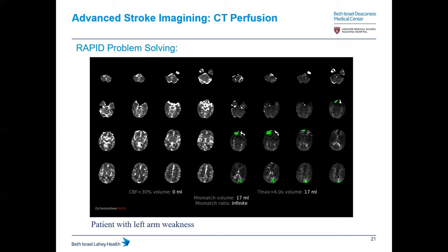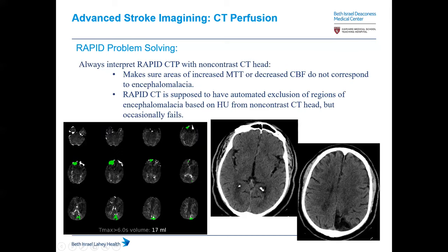RAPID does have problems, and you need to know how to problem solve. Here's a patient with left arm weakness — you can see CBF is less than 30%. But there's increased Tmax in a region that appears ischemic. However, looking at the non-contrast CT, that area is actually a region of encephalomalacia. RAPID is supposed to automatically exclude such regions using Hounsfield units from the non-contrast scan, but the program will fail. This region of increased Tmax corresponds to a region where there's no brain at all.